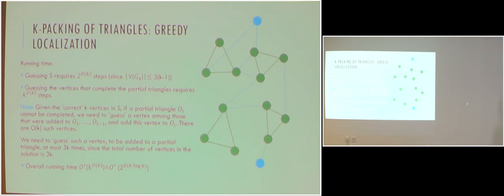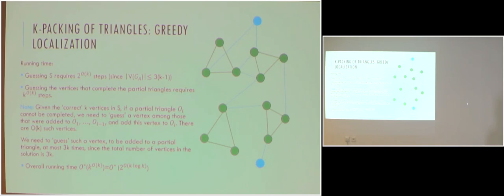To clarify the extension step: we try to extend each partial triangle avoiding vertices already chosen by other partial triangles. If triangle oi cannot be extended, it means we made a bad selection in previous triangles, so we take that collection of vertices, guess one of them, and check if adding this vertex to oi helps complete the triangle.